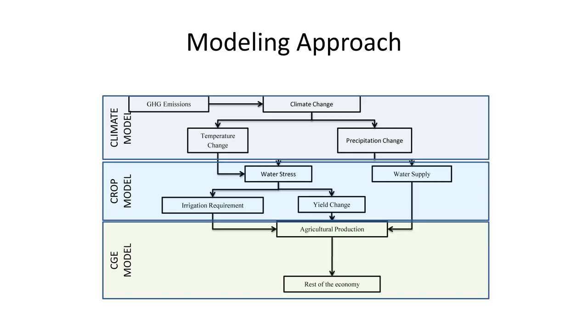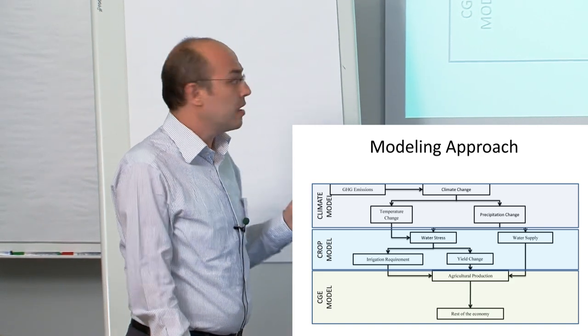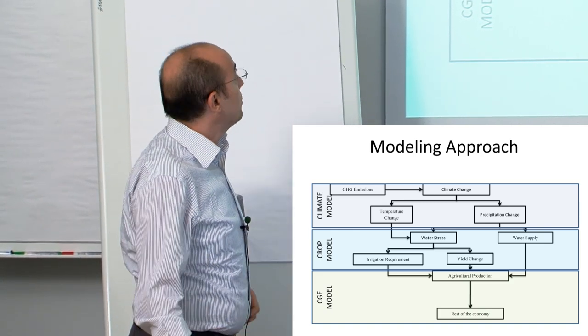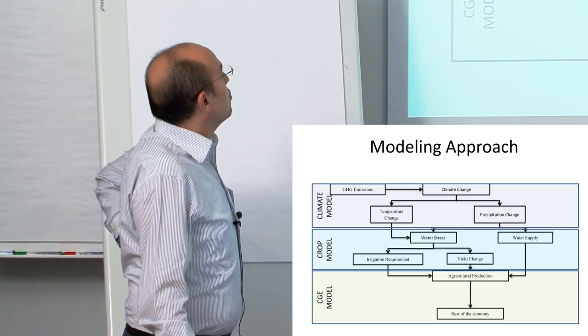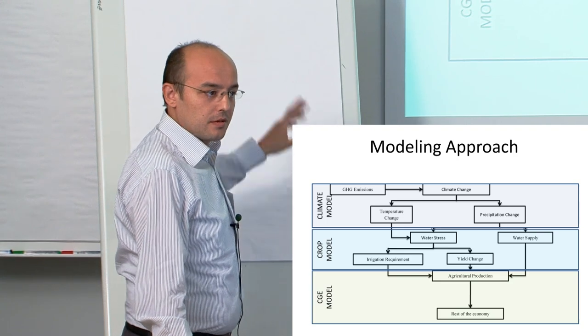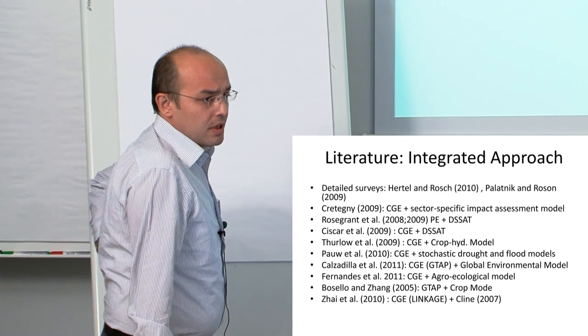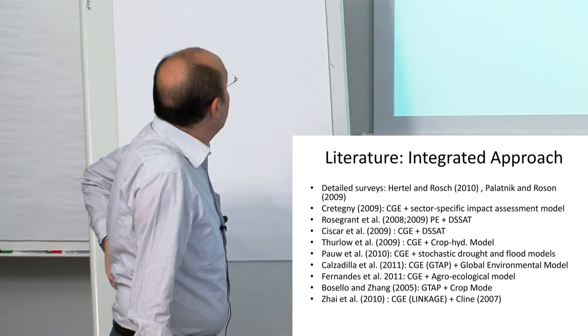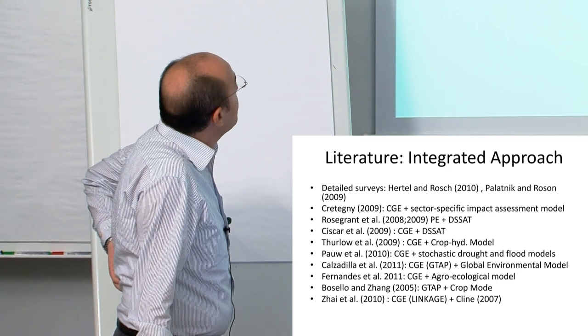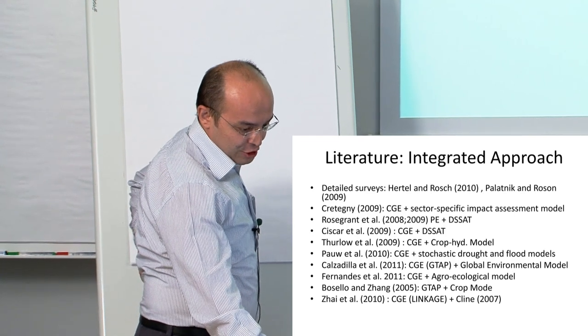We have a climate model—we're not running it but getting results from Istanbul Technical University who worked with the Hadley model and disaggregated it for Turkey up to 0.5 degrees. We feed these into a crop model, then introduce it to the CGE model. This integrated approach became very popular in recent years.